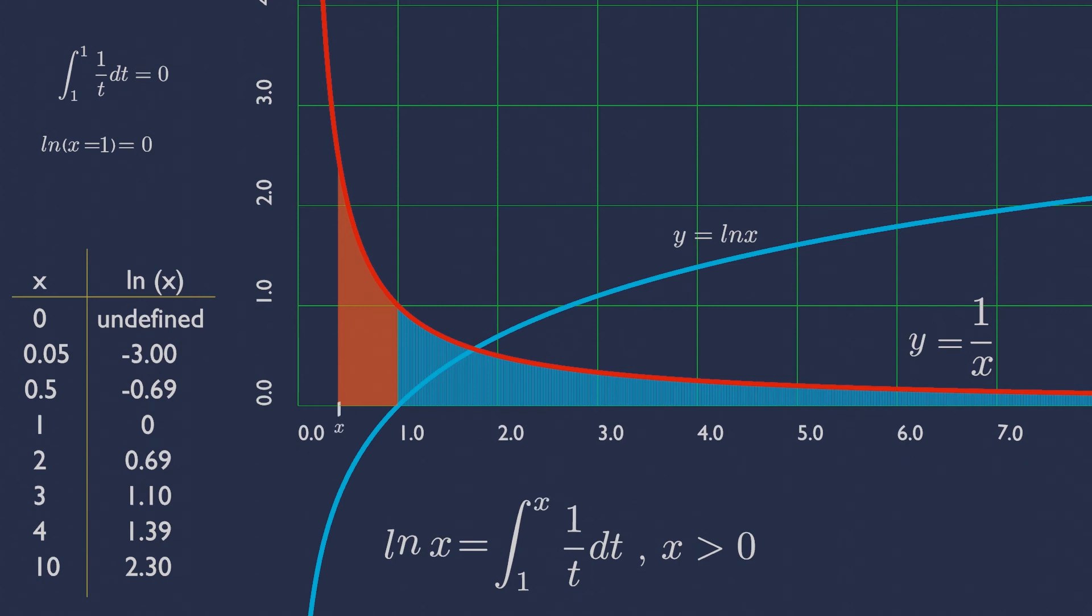Now, do you know any value of x that gives the area of exactly 1 unit? There is an important number between x equals 2 and x equals 3, whose natural logarithm equals 1.